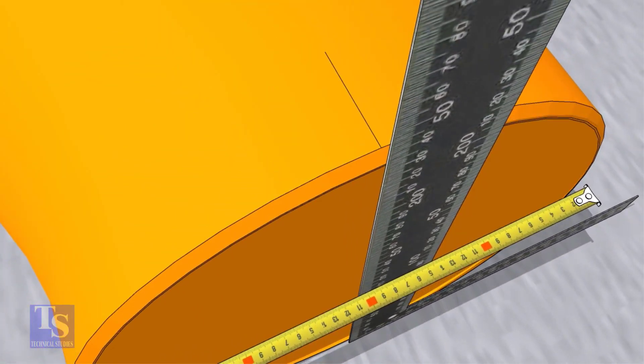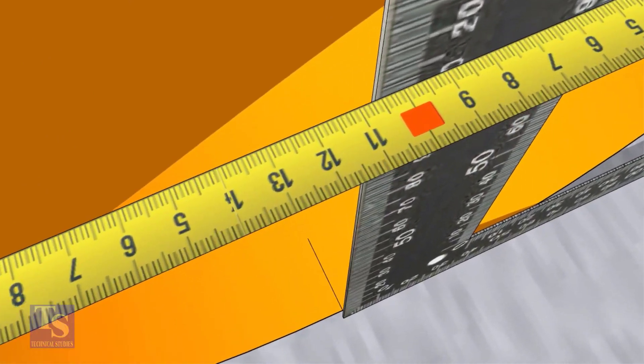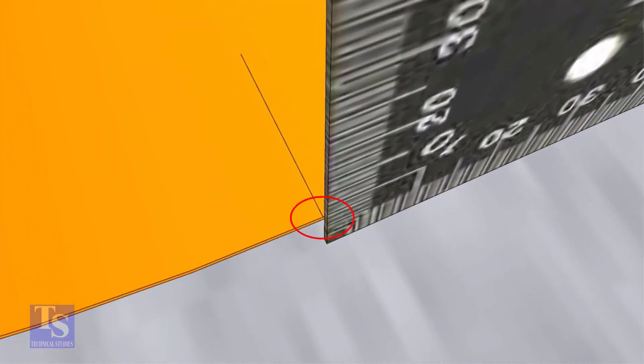Now, draw lines on the top and the bottom of the elbow, where the right angle face touches. Transfer this line to the outer face later.